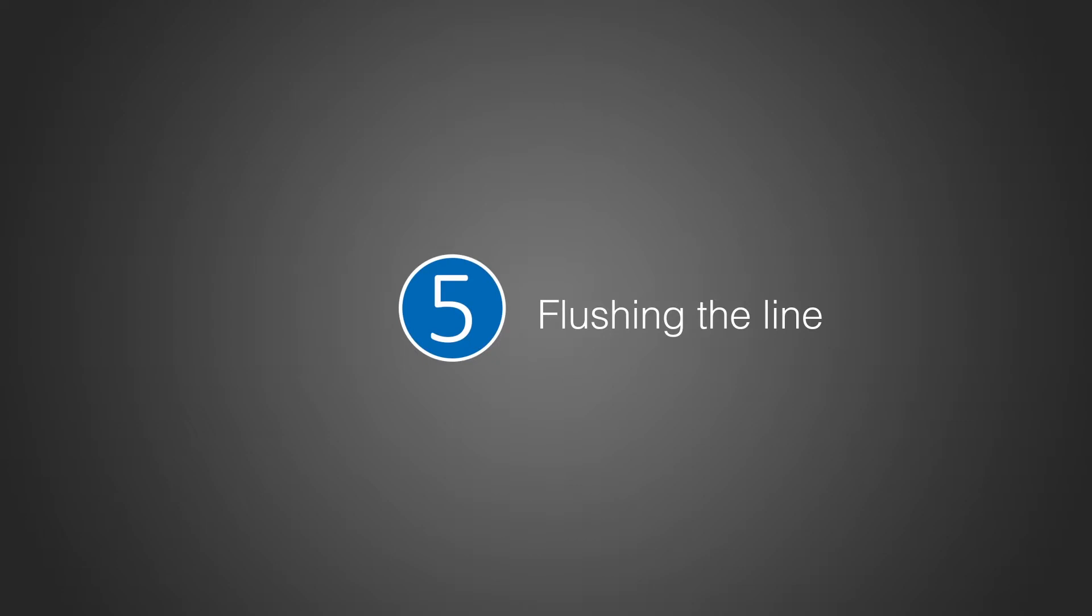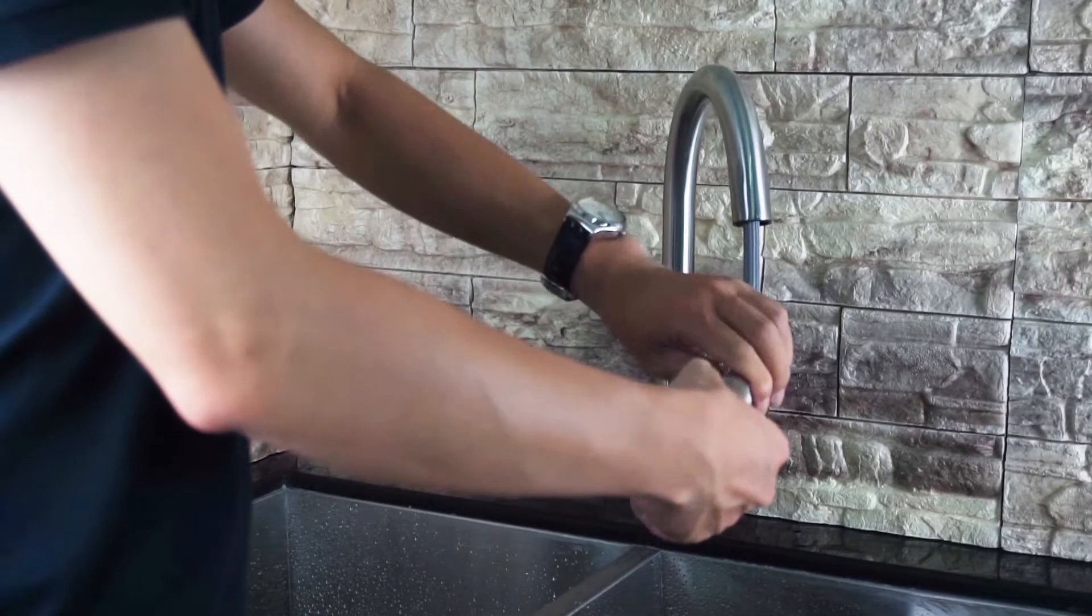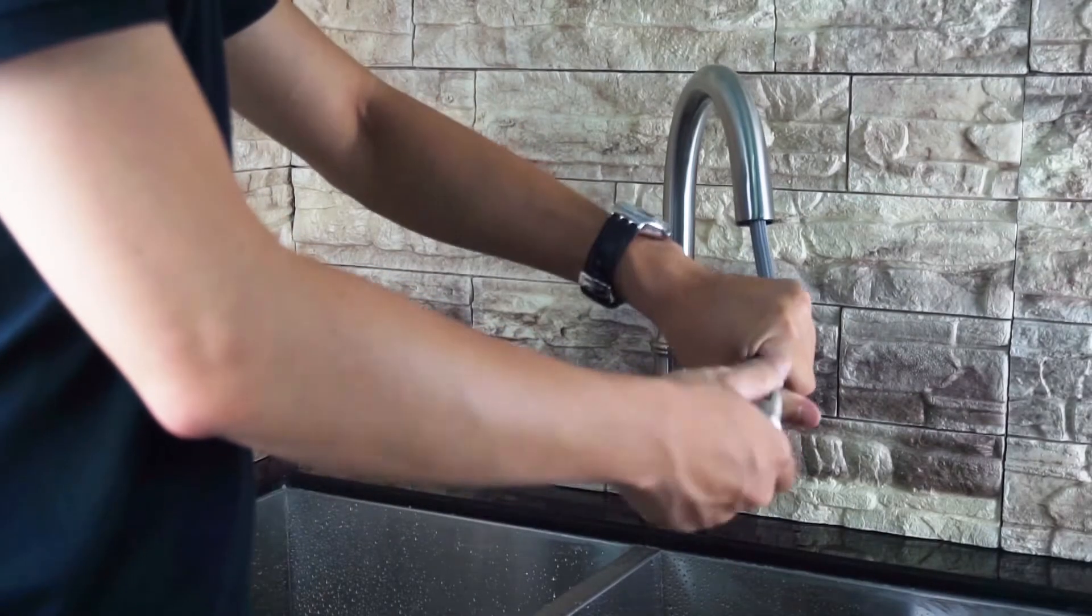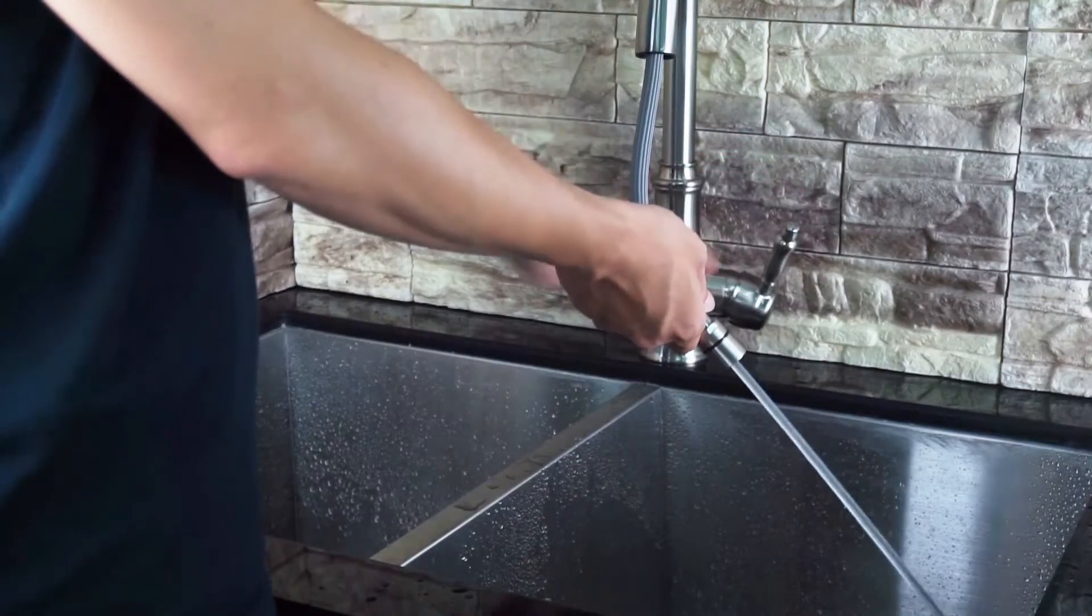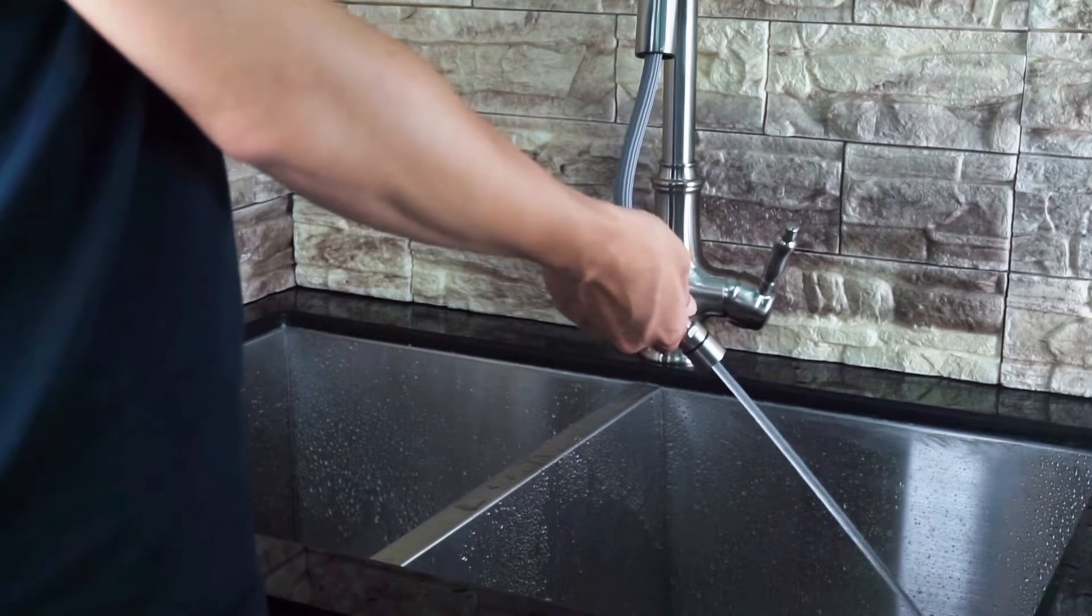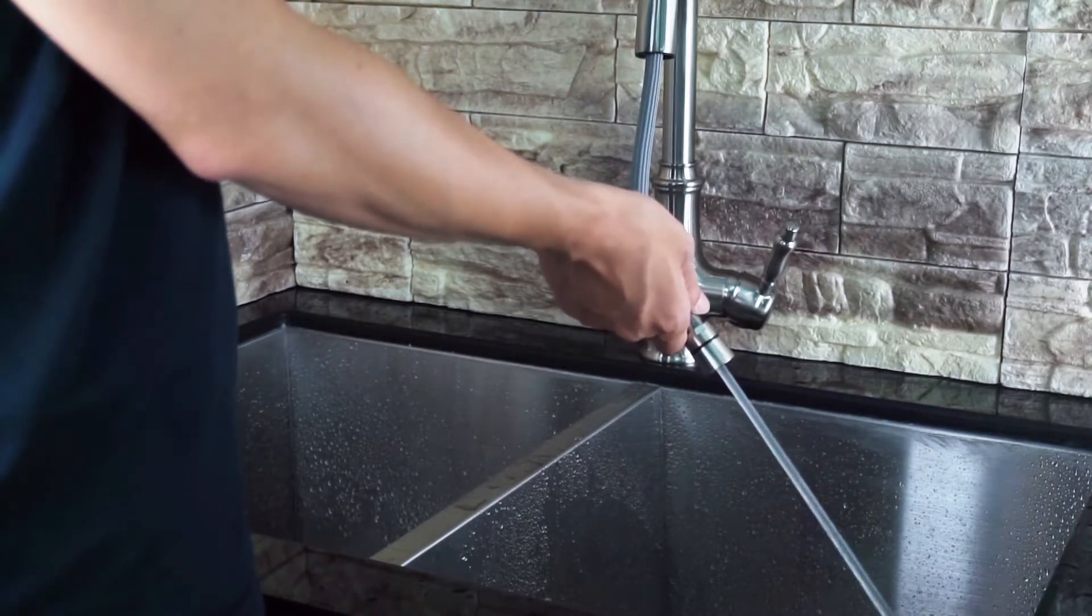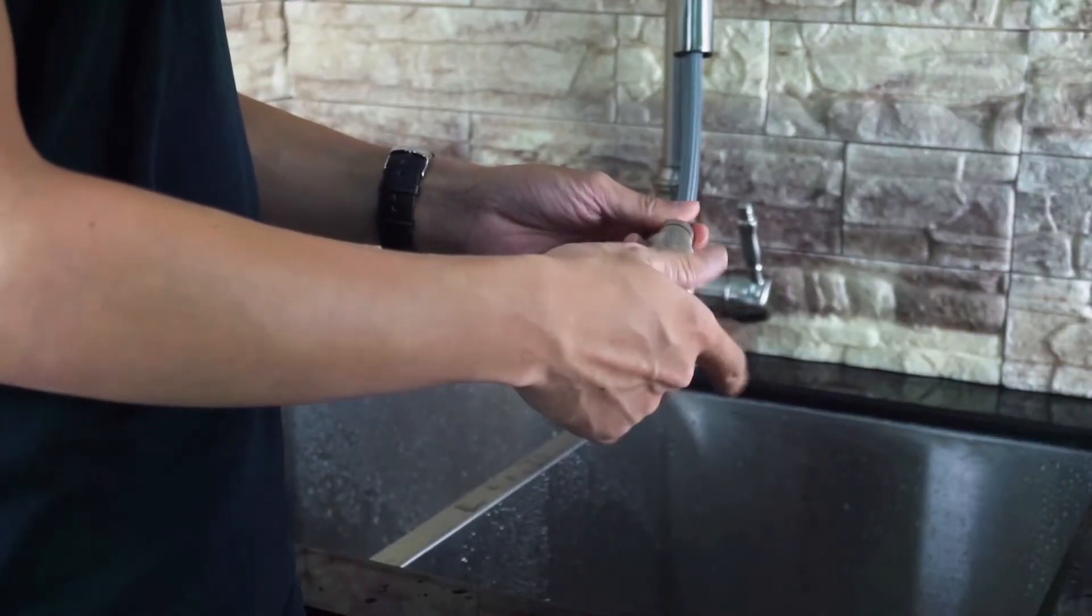Then install the spray head. Turn on the faucet to flush the hose and feed line for one minute to flush the debris. Turn off faucet and reinstall the spray head.